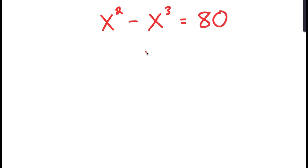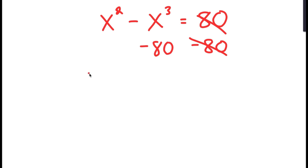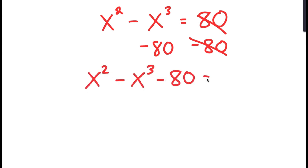To solve this equation, I'm going to first start by subtracting 80 on both sides. So now I get x squared minus x cubed minus 80 is equal to 0.